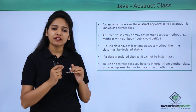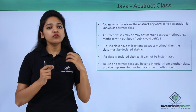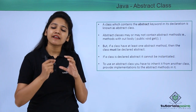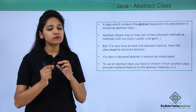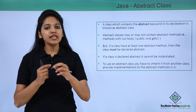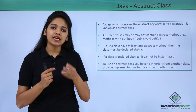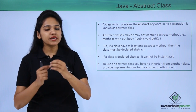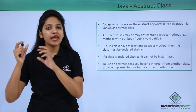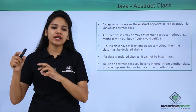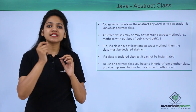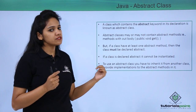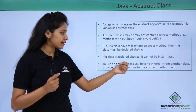Instantiation means creating an object reference for your class. For a normal class like an employee class, you write: Employee objectName = new Employee(...). This is how you instantiate a class. But if your class is abstract, you cannot instantiate it.